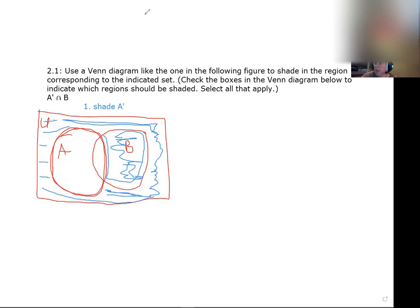And then for the second step with a new diagram, shade B. The reason I'm doing this in multiple steps is so I can see what's happening between the two different figures.